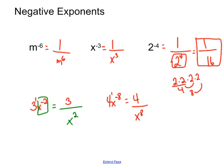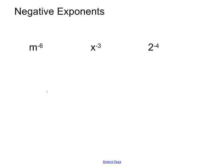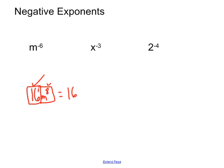What about 16m to the 8th power — do we need to move anything? Is the 16 happy? It has a positive exponent of 1, so it's happy and stays. What about m to the 8th? It has a positive exponent, so it's going to stay exactly where it's at.